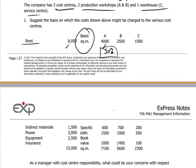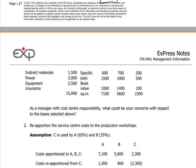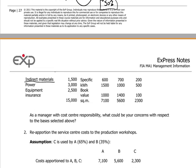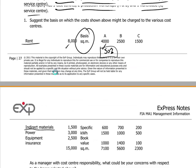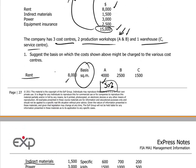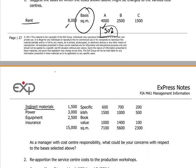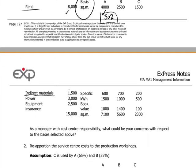We can investigate further and see that the indirect materials, which amount to $1,500, are specifically able to be split up on a specific basis between the three cost centers. That was an easy one — that is what we call simply allocating the costs.